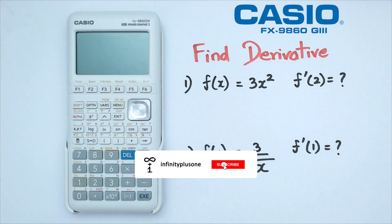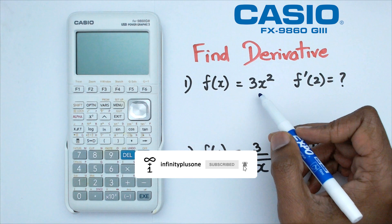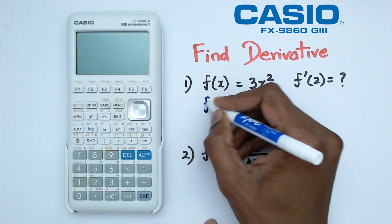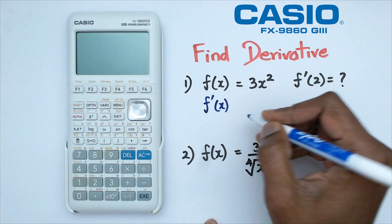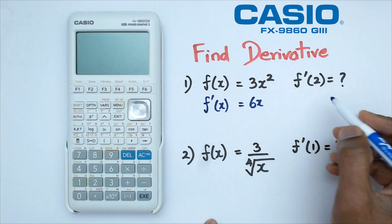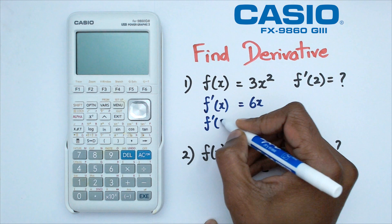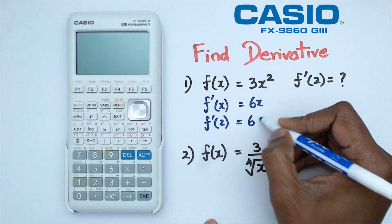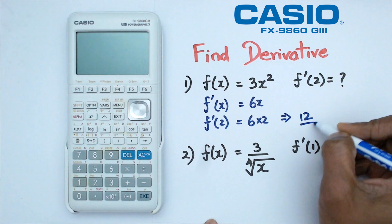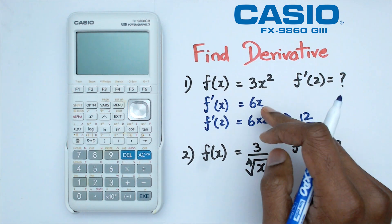All right, so normally when we have f of x, what we need to do first is we need to differentiate this function. When we differentiate this function, we are going to get f dash of x is equal to 6x. And then to find f dash of 2, what we do is we would actually go 6 multiplied by 2, which then is equal to 12. So 12 is going to be our answer for this question.